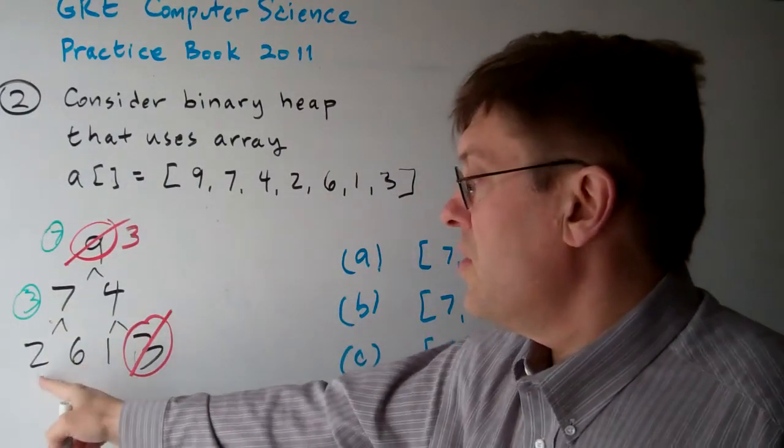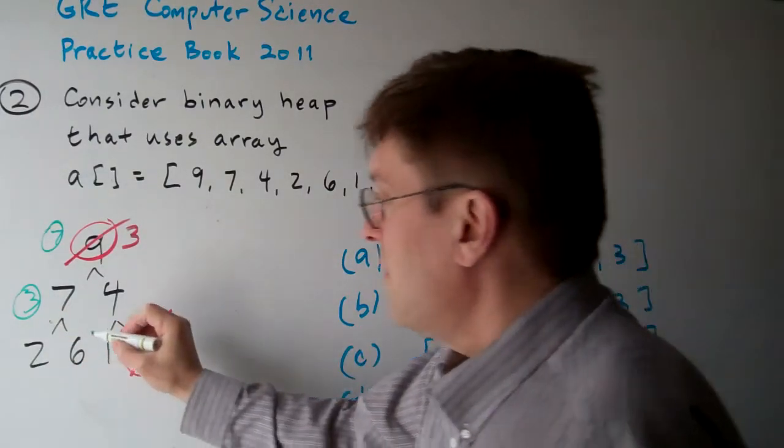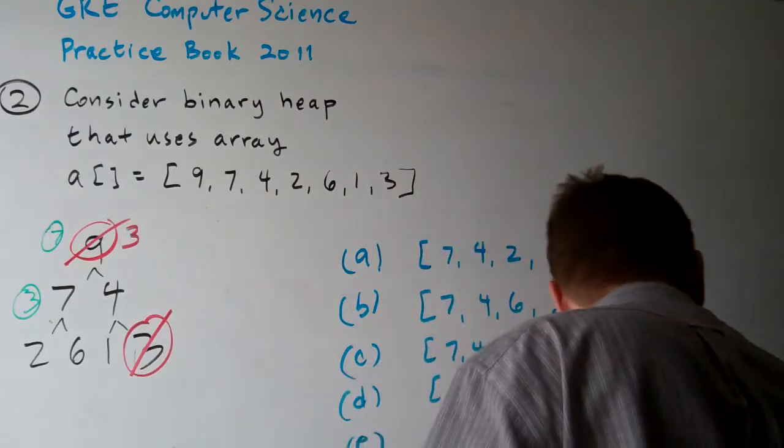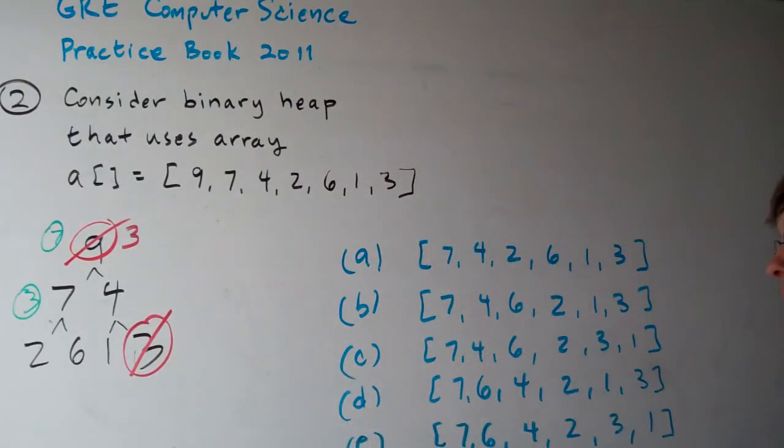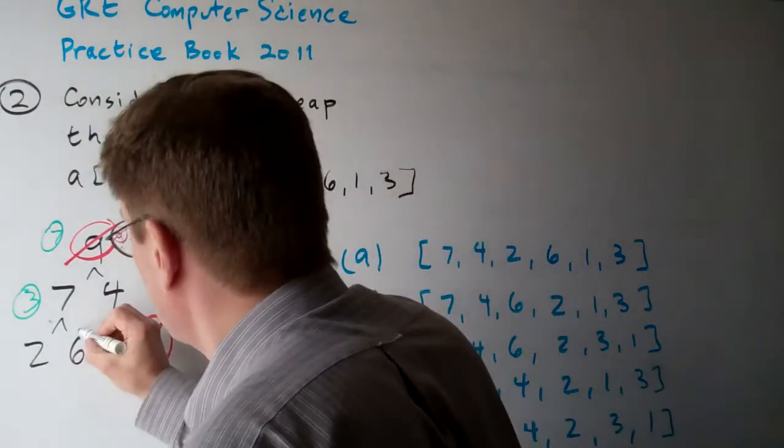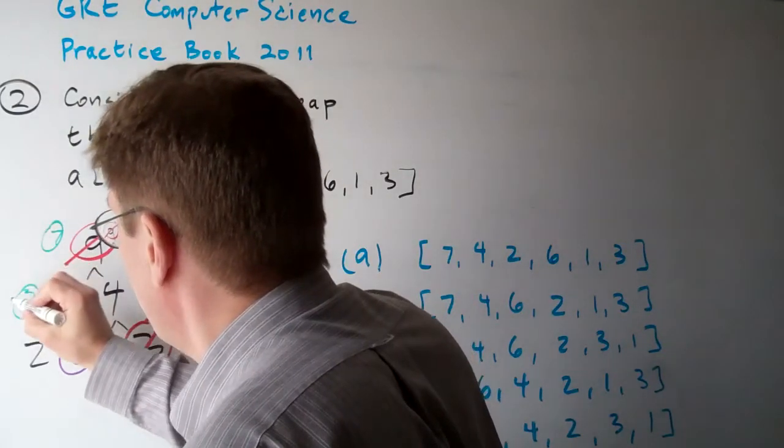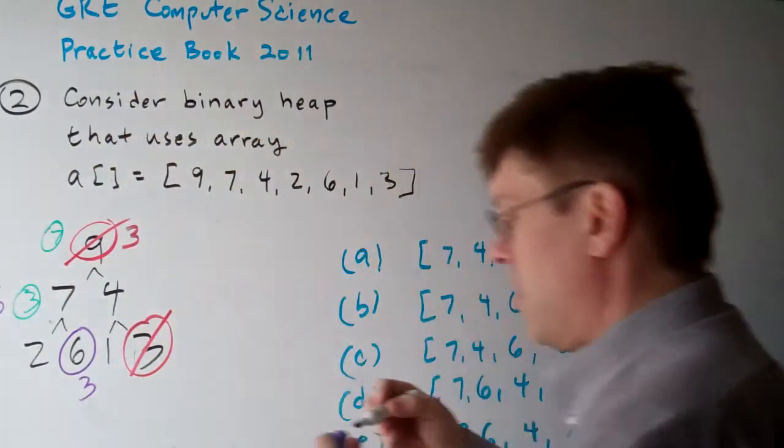Then the three's going to look at the two and the six. The six is higher. Let's use a new color for that. So the six is going to go up here and the three is going to go down there.